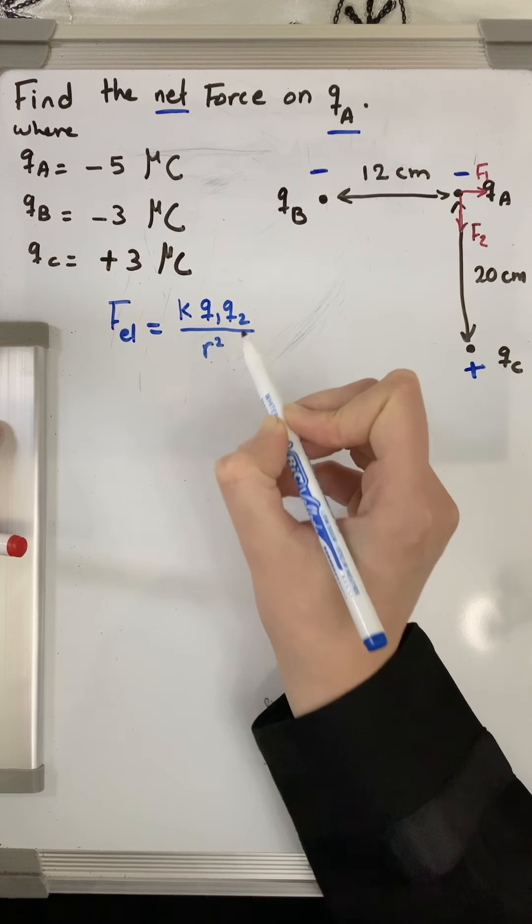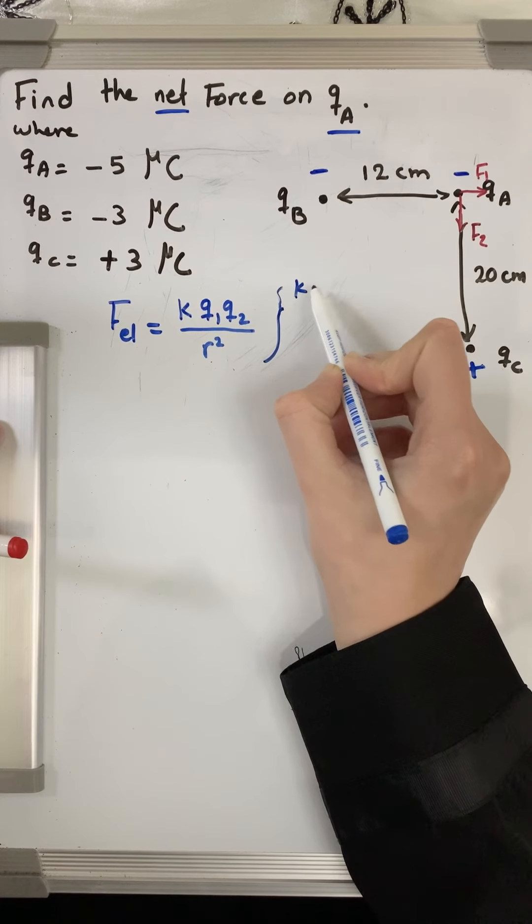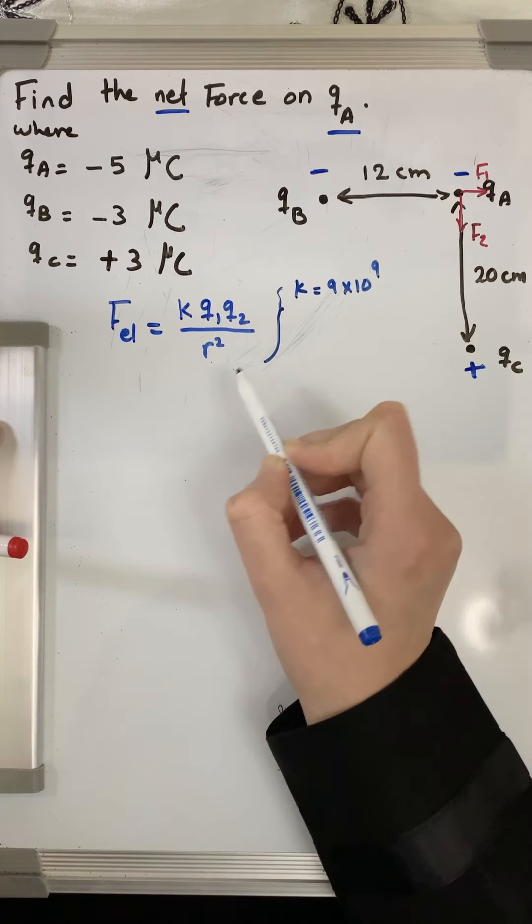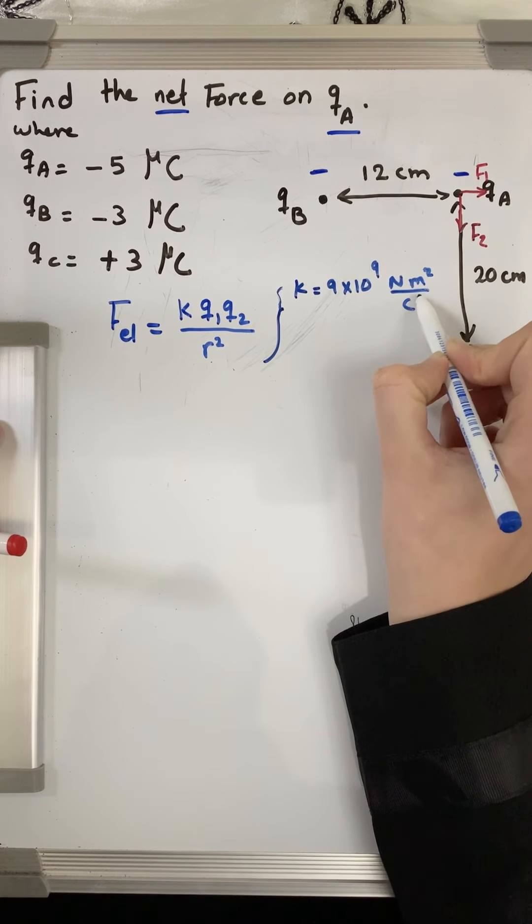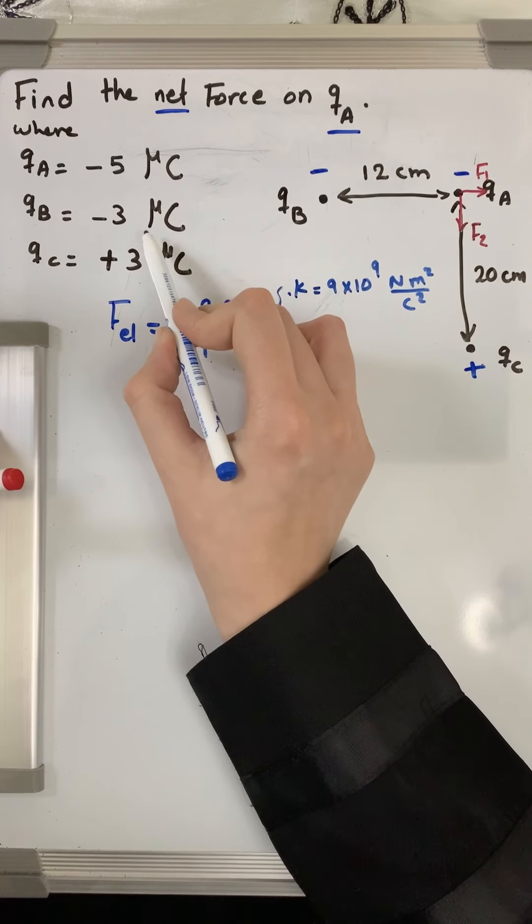Where k, this is just a reminder for you, k is a constant: 9 times 10 to the power of 9 newton meter squared divided by coulomb squared. Also, something else to put in our mind here...